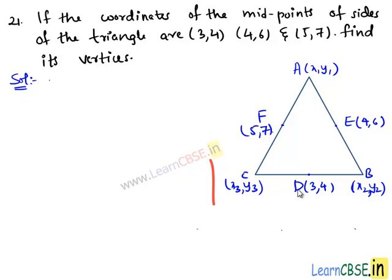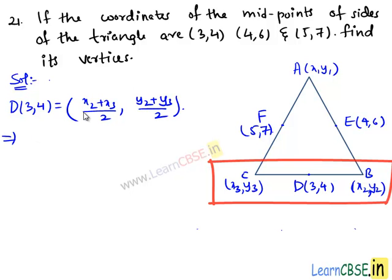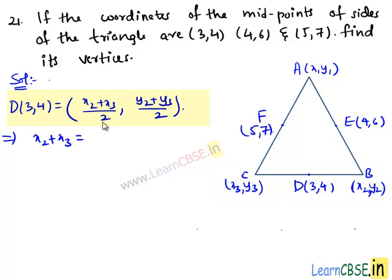Here, the point D is the midpoint of BC. That is, D(3, 4) equals (x2+x3)/2, (y2+y3)/2. This implies, equating the x-coordinates, we get x2 + x3 = 2×3, that is 6. And y2 + y3 = 2×4, that is 8. Let it be equation number 1.